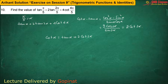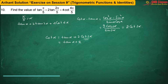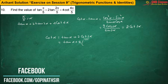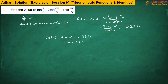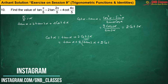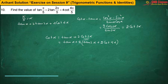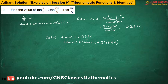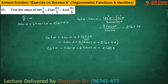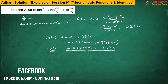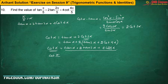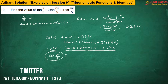Similarly, cot 2α = tan 2α + 2cot 4α. Opening the bracket: tan α + 2tan 2α + 4cot 4α is nothing but cot α. What is α? It is cot(π/5). And that will be your answer.